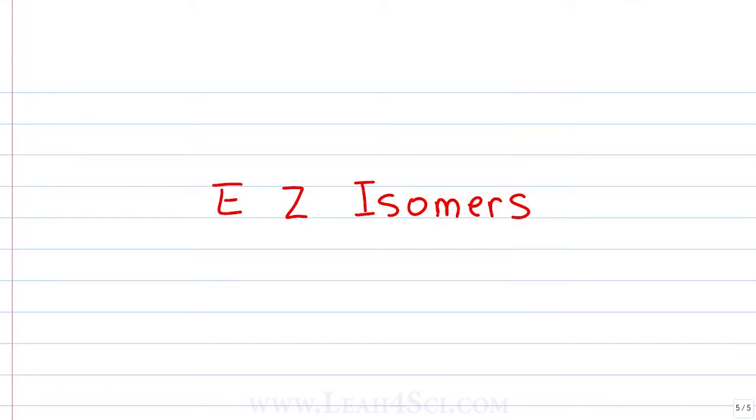Leah here from leah4sci.com and in this video we're going to look at E and Z isomers for alkenes. In the last video we looked at cis and trans isomers, and we left off with a question of what happens when you're trying to find cis or trans for a pi bond where the substituents are set up in a way where they could be cis to each other or they could be trans to each other. When that's the case, you need a higher level of ranking and this is where the E and Z configurations come in.